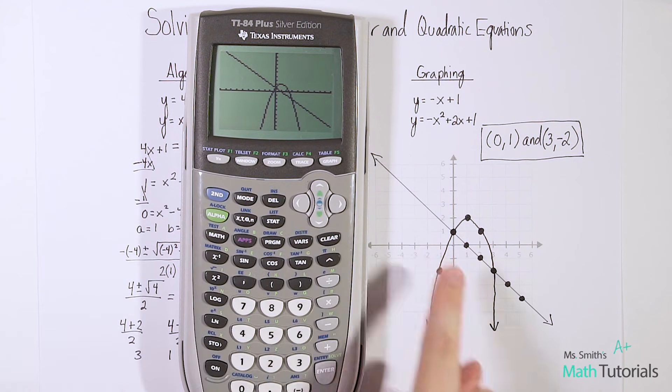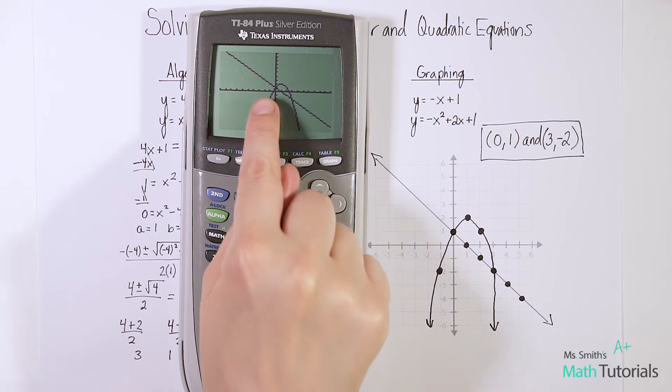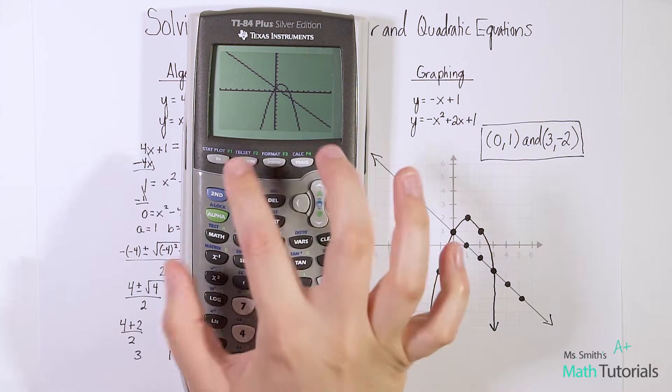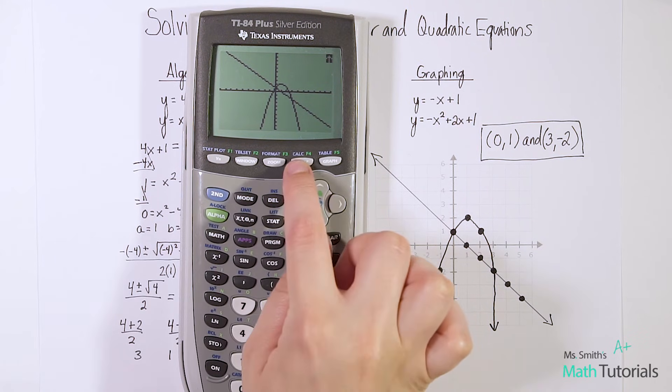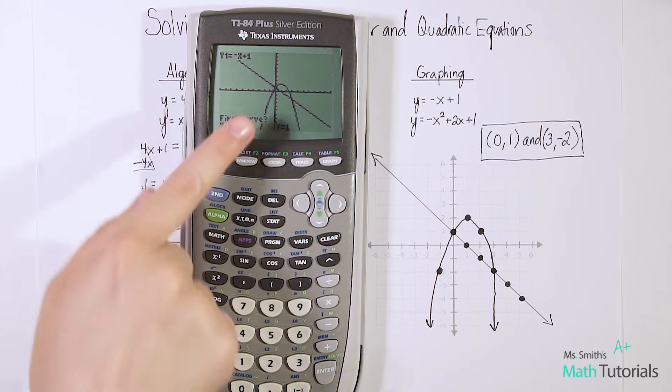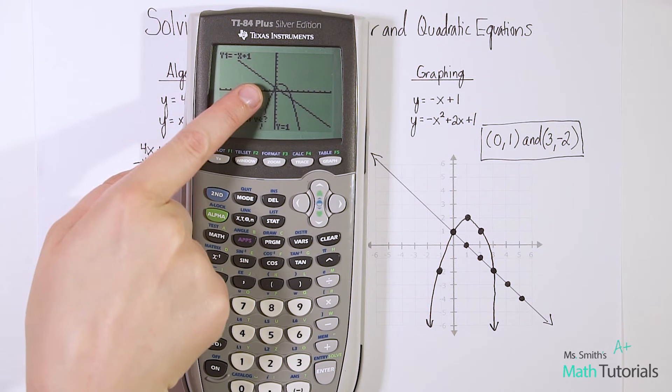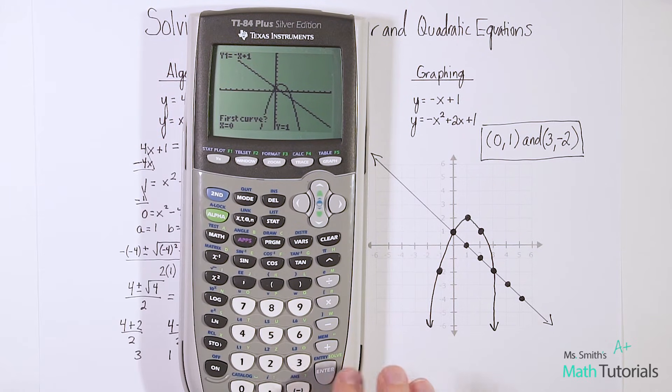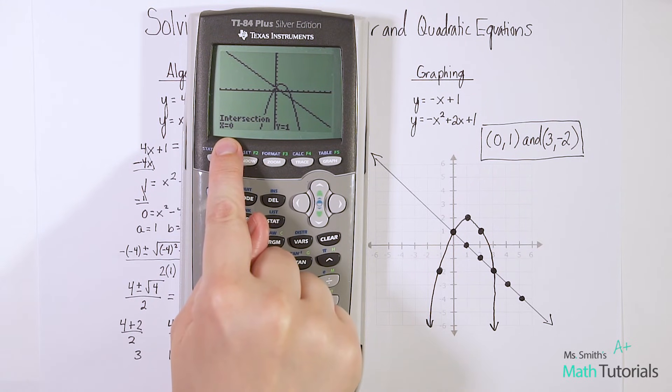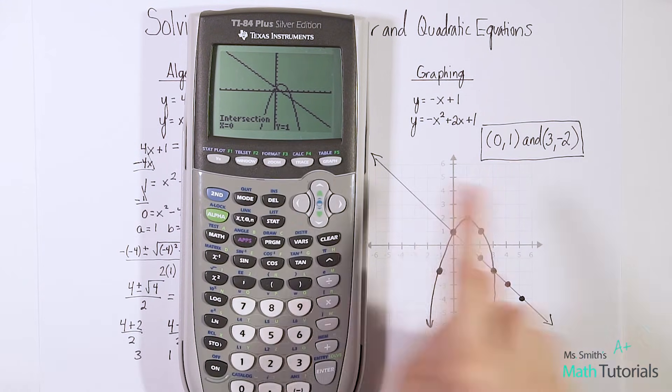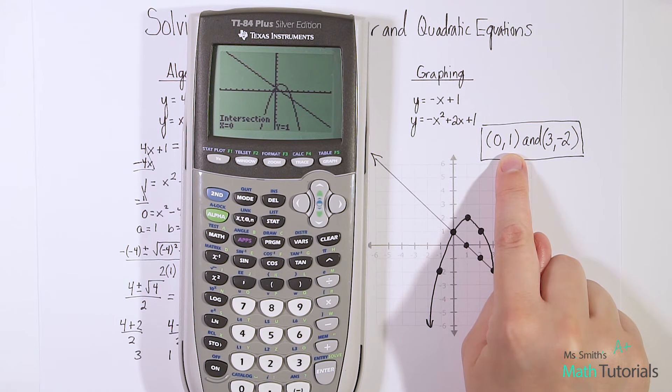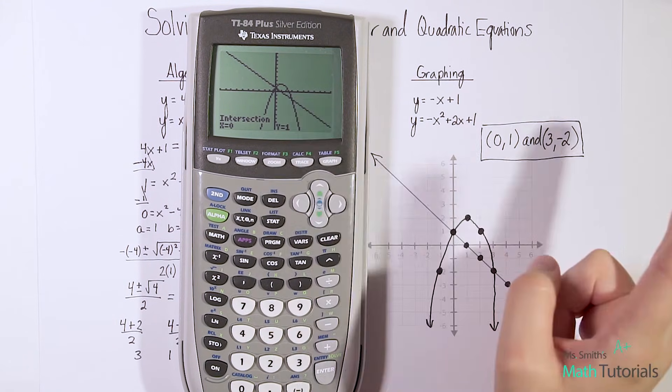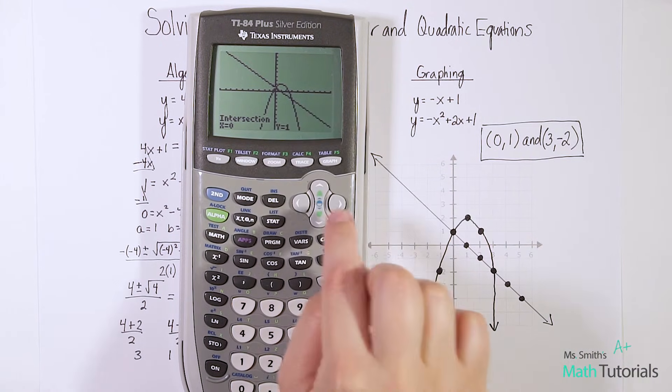In order for me to find those intersecting points, because I would want to know what those points are, I just have to hit second, trace, 5. And notice how one shows up right there, I think of it as like a blinking spaceship. It shows up right on the intersection. All I have to do is hit enter three times. One, 2, 3. And it's going to tell me the intersection is at 0 and 1. And isn't that what I got? 0 and 1. But now I want to know the other intersection because there are two. I can clearly see two here. So I just do it again. I go second, trace, 5.